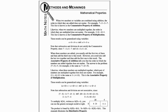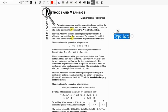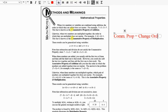The way that I remember the commutative property is C in the word commutative and C in the word changing the order. So to me, commutative property — we can abbreviate it this way — is equivalent to changing the order. What it's saying is you can change the order of the numbers, variables, what have you, in addition or multiplication, and you won't change the answer.